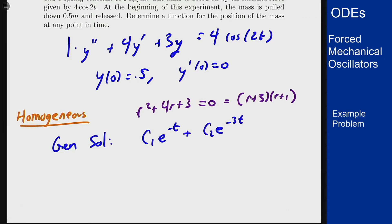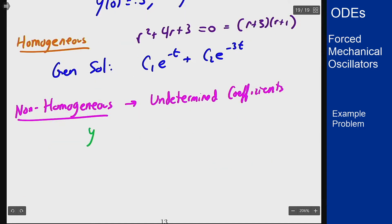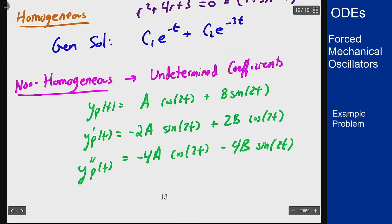Now for the non-homogeneous part, or the forced response, we are going to use undetermined coefficients, and with that we're going to guess yp of t is a cosine 2t plus b sine of 2t, and then we can take two derivatives of this expression and plug it into the equation.